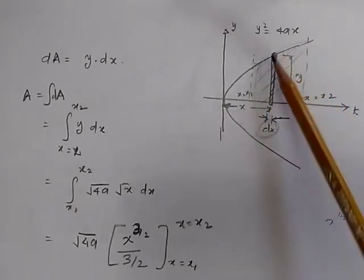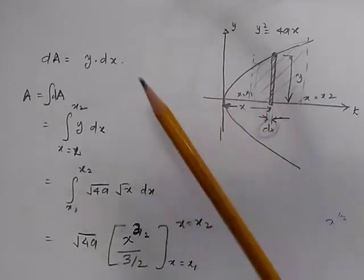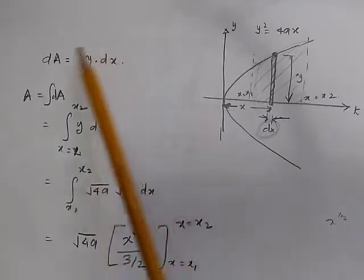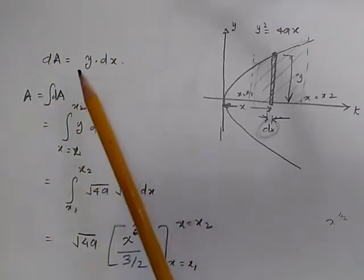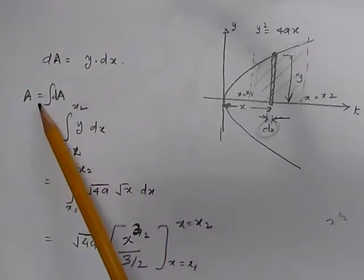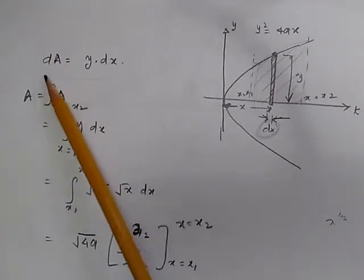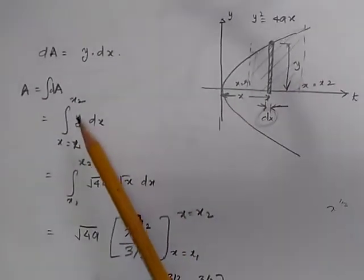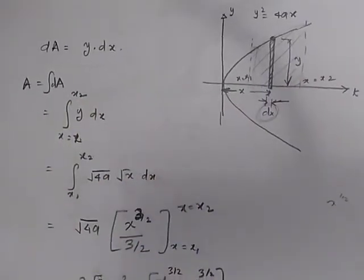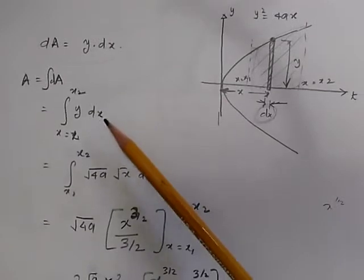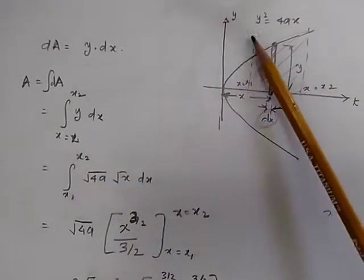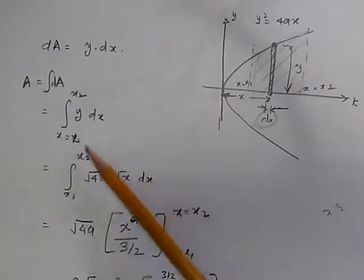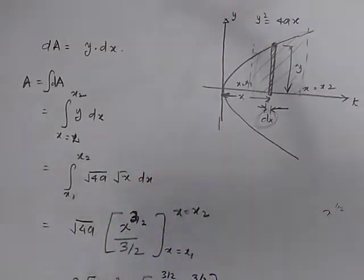We focus on a very small segment and find the final value using these small differentials. The total area is given by the integral of dA from x equal to x1 to x equal to x2. We write dA as y dx. Fortunately, y is a function of x — it varies as x varies — and if we can express y in terms of x, our problem becomes easier.